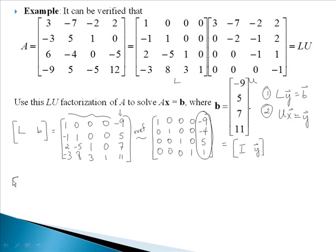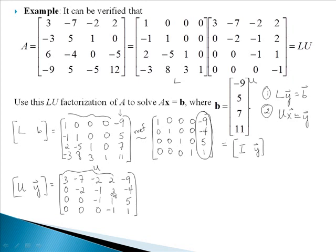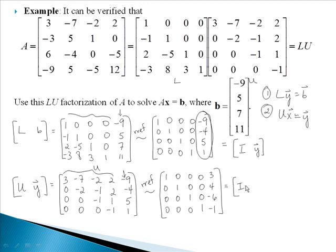Now my second step is to write my augmented matrix with U and then the vector Y that we just found. This first part is my matrix U from up above, and this is the Y vector that we found in the first step. We're going to row reduce this and we want to get the identity on the left. We've row reduced this down to where we got the identity, and now we've found our solution vector, vector X. This is my solution. The vector X is equal to the vector 3, 4, negative 6, and negative 1.